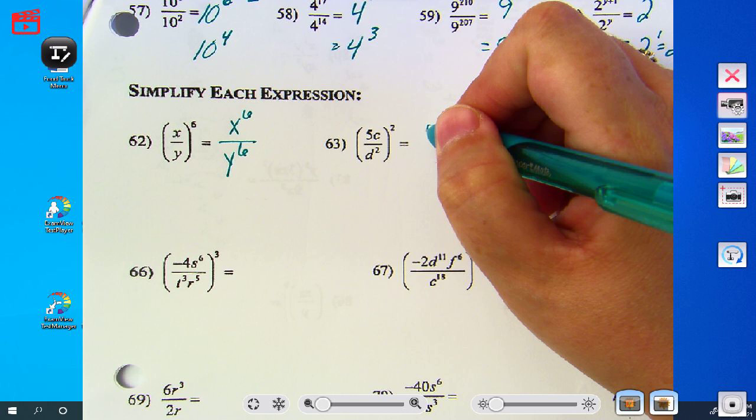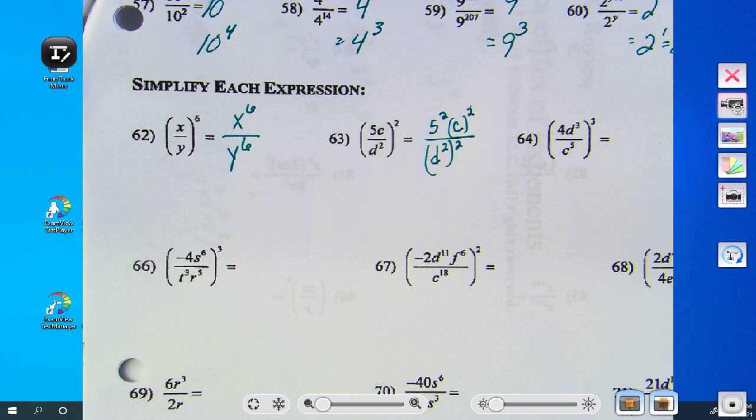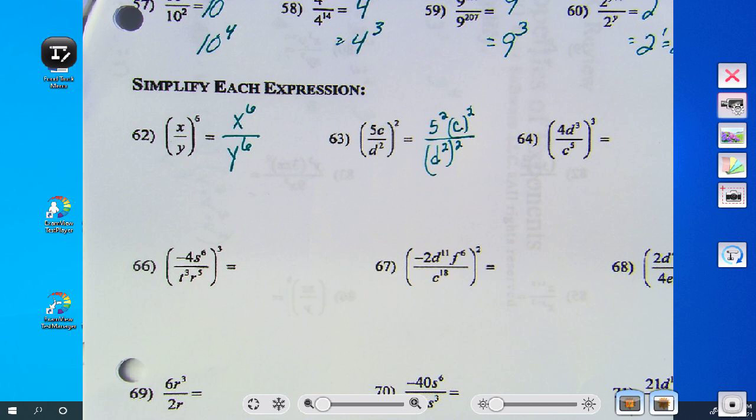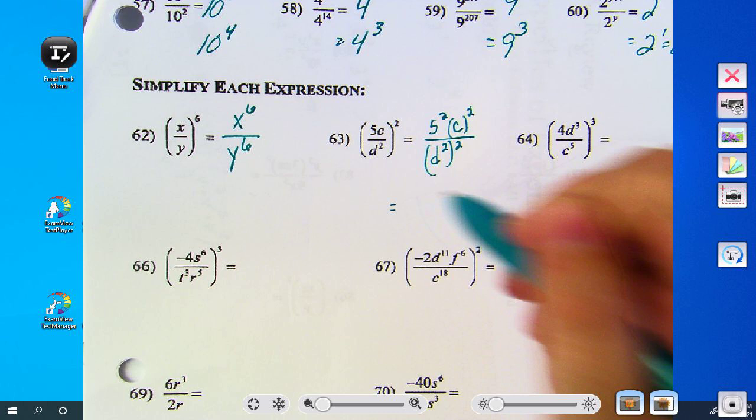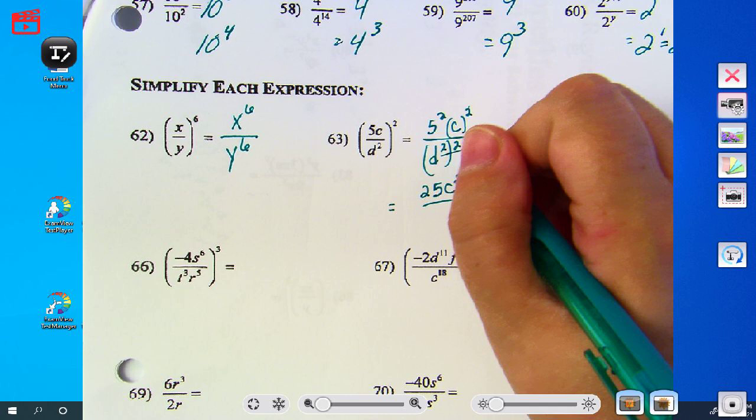And even if we look at 63, the 5 has to be squared, the C has to be squared, and the D squared has to be squared. So 5 squared is 25, C squared is C squared. And on the denominator, 2 times 2 is 4.